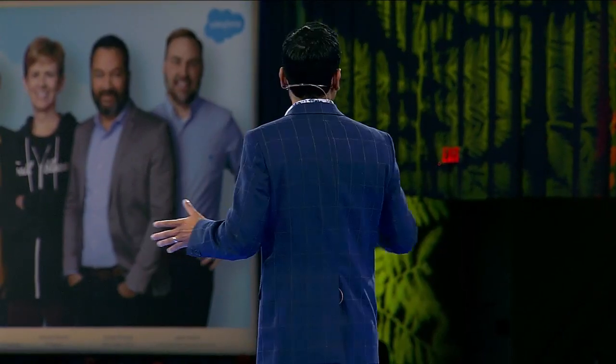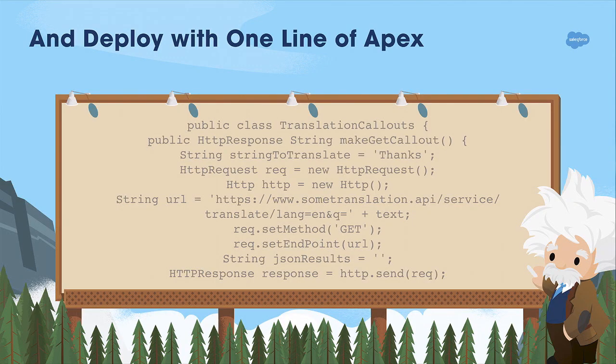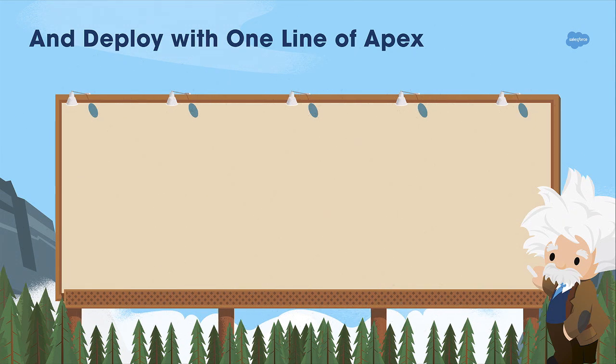As developers, you can access all of these services through standalone REST APIs. But even better, you can access them natively in Salesforce Apex — not with 100 lines of code, not with 50 lines of code, not even with 10 lines of code, but with a single line of Apex. Like, poof — magic.